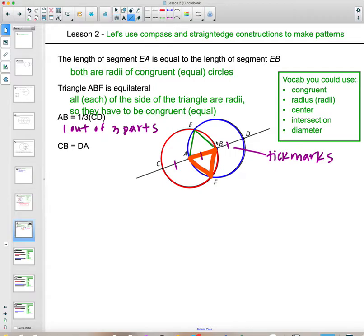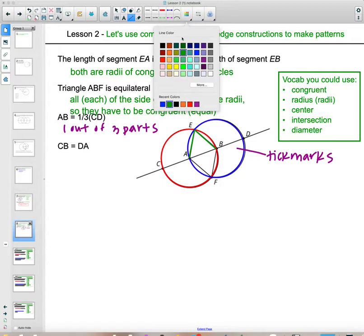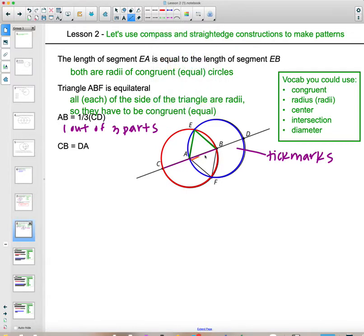How do we know that CB, let me erase a little bit of this so we can kind of see, how do we know that CB is congruent to DA? That would be because they're both diameters. Both of those are diameters.